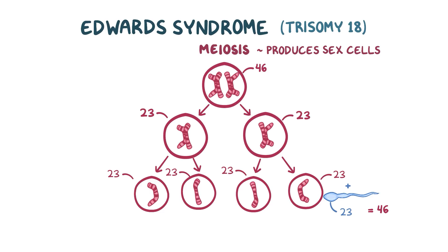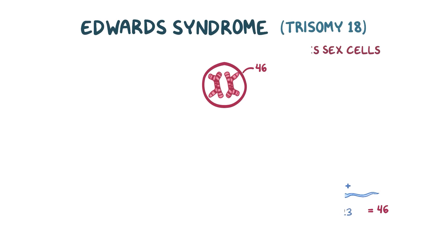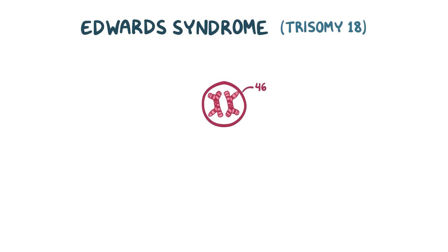Let's see how someone can end up with three copies of chromosome 18 instead of the regular two. With Edwards syndrome, or trisomy 18, a process called non-disjunction accounts for most of the cases.